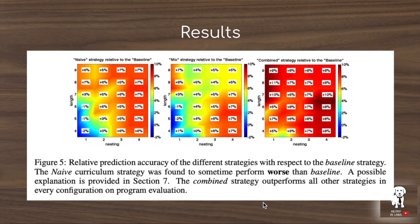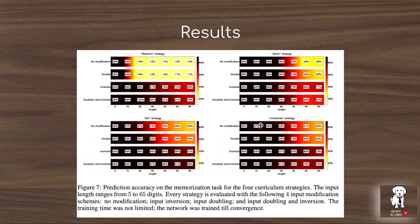Additional plots show the difference between curriculum strategies relative to the baseline. In the difference heat maps, blue indicates the baseline performs better and red indicates the curriculum outperforms it. Comparing the naive growing curriculum to the combined strategy — which samples from both the mixed and naive distributions — the combined strategy shows much larger gains. This pattern also generalizes to the input doubling and reversing tasks, where the combined strategy consistently outperforms the naive, mixed, or baseline curriculums.